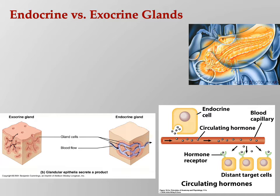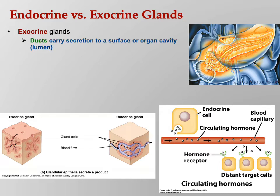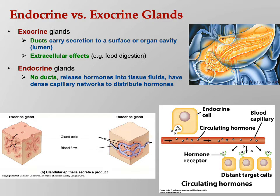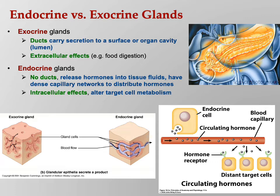Endocrine versus exocrine — just to hammer this one more time. Endocrine are released into the blood. Exocrine release either outside the body or into the lumen of an organ. Exocrine glands carry the secretion to the surface or to an organ cavity via ducts; they have generally extracellular effects such as food digestion or sweating to cool the body. Endocrine glands have no ducts — the hormones are released into tissue fluids and then immediately taken up into the blood, released back into the ISF elsewhere, and diffuse through the ISF to bind to receptors on target cells. They generally have intracellular effects. Hormones are incredibly powerful; they often change the very metabolism of the cell and have profound effects.